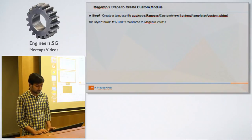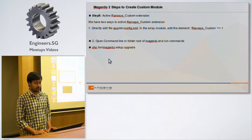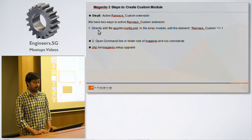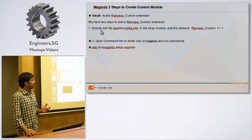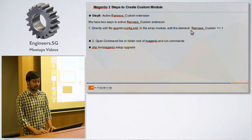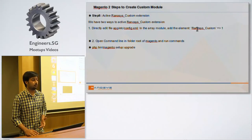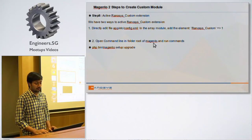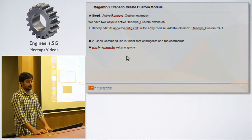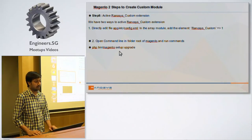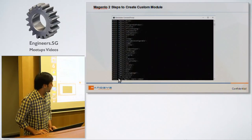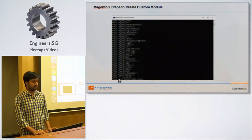To activate your module, you can add Ranosys_Custom with value 1 to config.xml, but your module will not even appear in the admin until you run the command php bin/magento setup:upgrade. After running this command your module name will appear in the list and it will show in the backend.